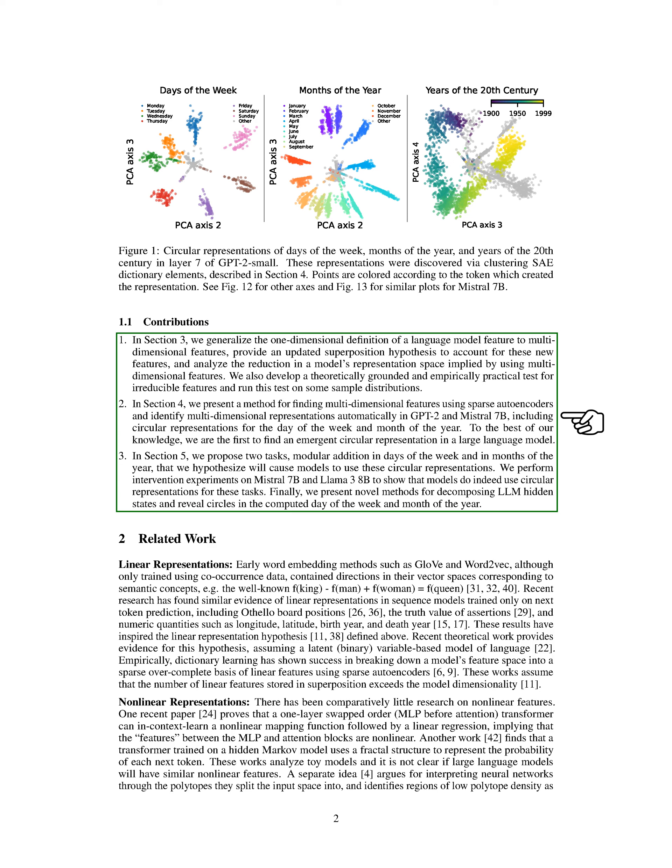We introduce a method to discover multidimensional features using sparse autoencoders in GPT-2 and Mistral-7b. We identify circular representations for the day of the week and month of the year in these models, which is a novel finding. We propose two tasks involving modular addition in days of the week and months of the year to demonstrate the use of circular representations by models. Through intervention experiments on Mistral-7b and Llama-38b, we confirm that models indeed utilize circular representations for these tasks.